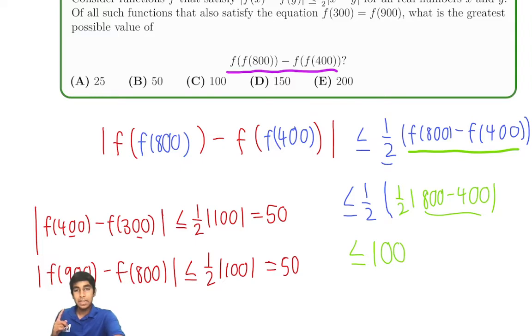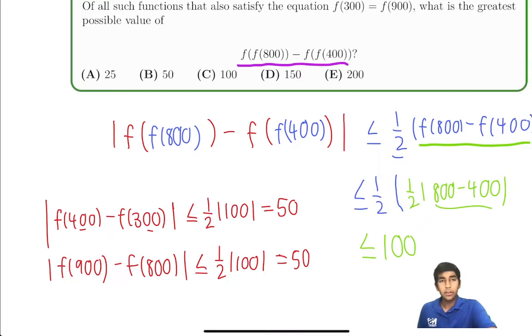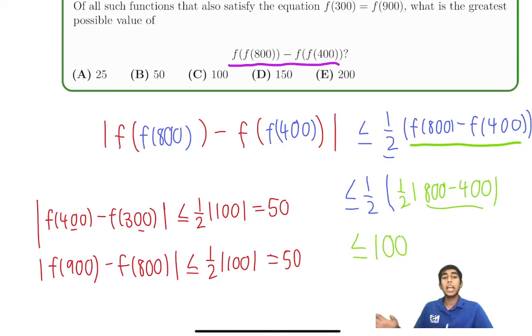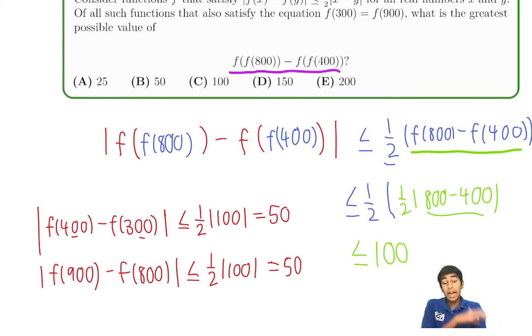So maybe, as you can see here, both f(400) and f(300) are less than or equal to 50 apart, and f(900) and f(800) also less than or equal to 50 apart. At most, 50 apart.